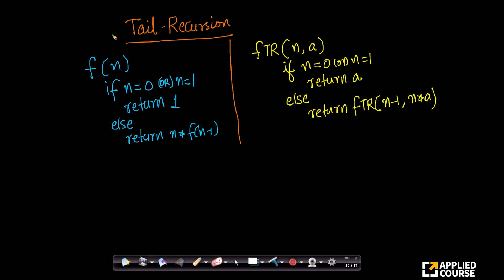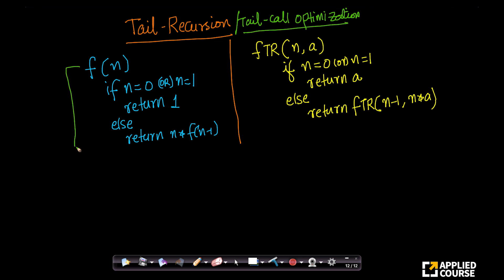There is this very interesting idea called tail recursion, which is also referred to as tail call optimization in compilers. I will explain what it does with the same example that we have. This is the regular recursion — the standard recursion we have already seen. There is another function I am defining called f tail recursion; 'tr' basically stands for tail recursion.